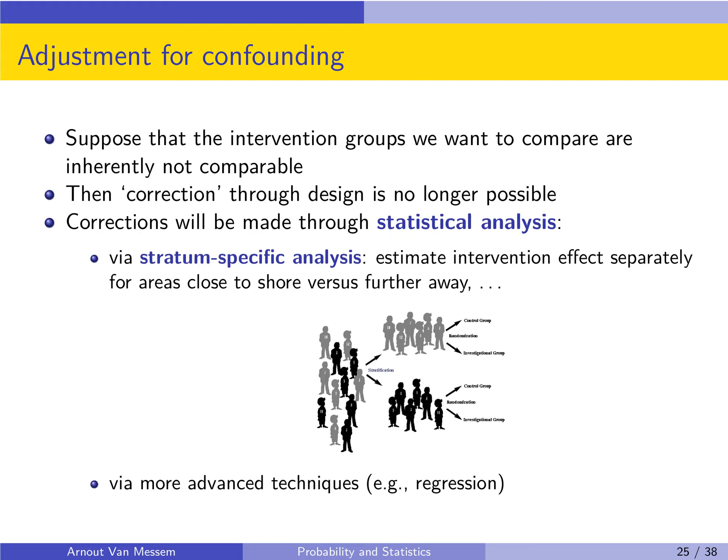The disadvantage of this technique is that it is not easy to correct for confounding. So suppose that both intervention groups that we want to compare are inherently not comparable, then we can no longer correct this through the design because we split them in two different groups. So corrections will have to be made through the statistical analysis either via a stratum specific analysis or via more advanced techniques such as regression.